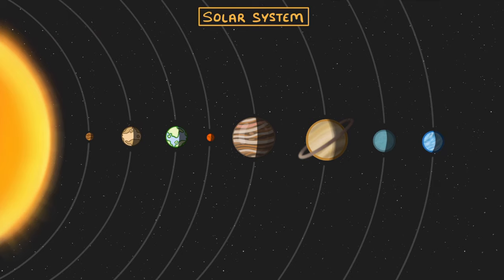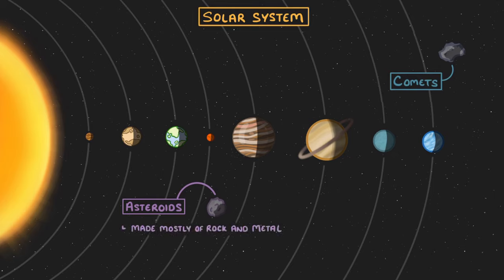Two other structures to know about are asteroids and comets. They're both pretty similar, but asteroids are mostly made of rock and metal and are found mainly in the asteroid belt, which is between Mars and Jupiter.